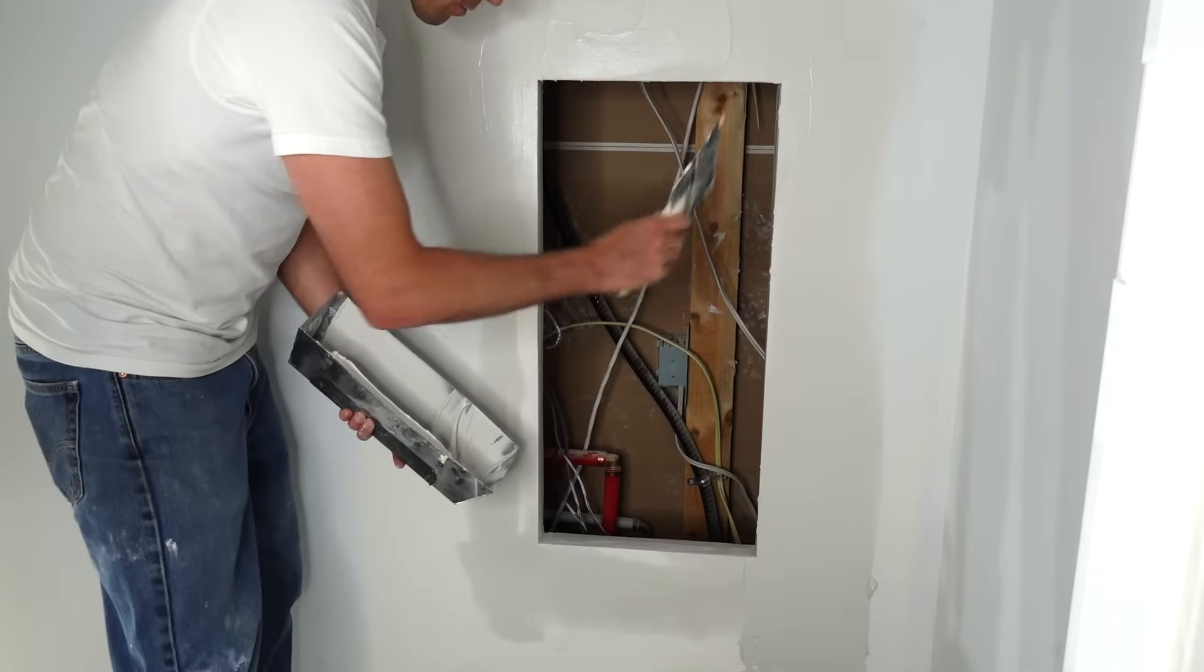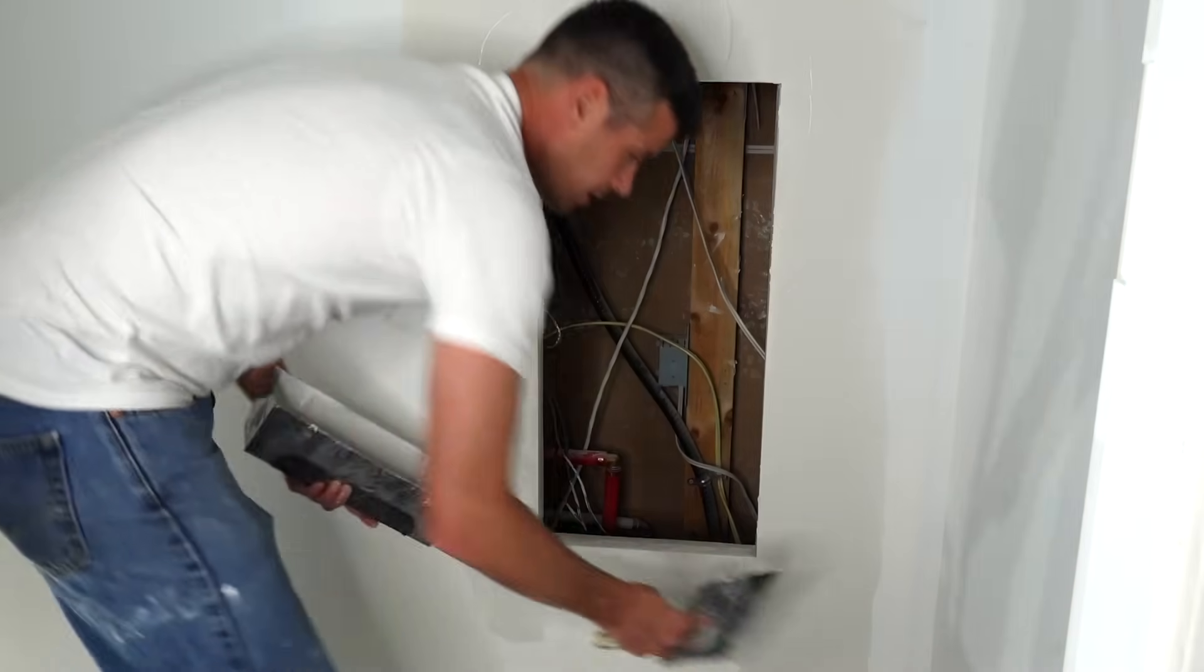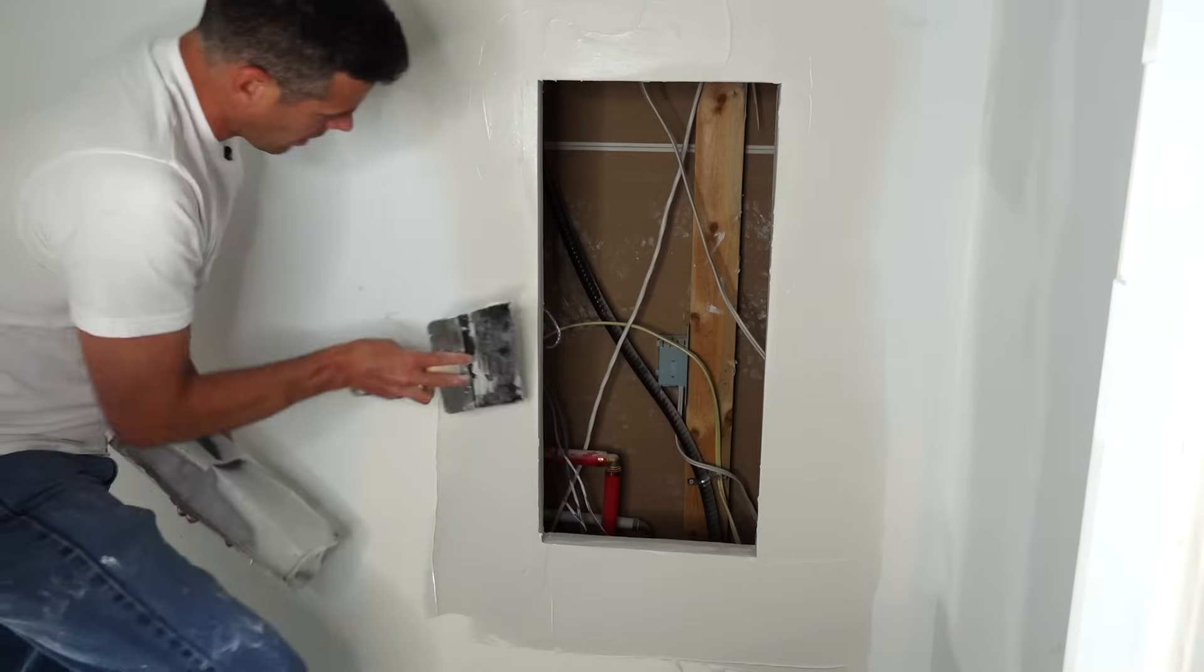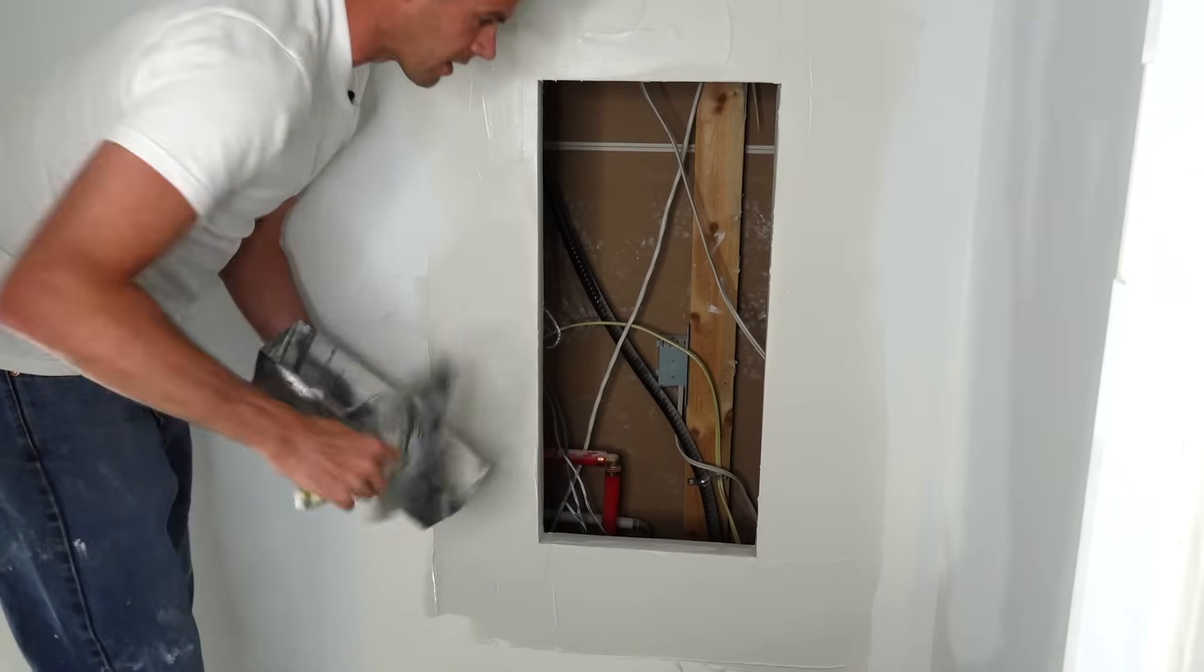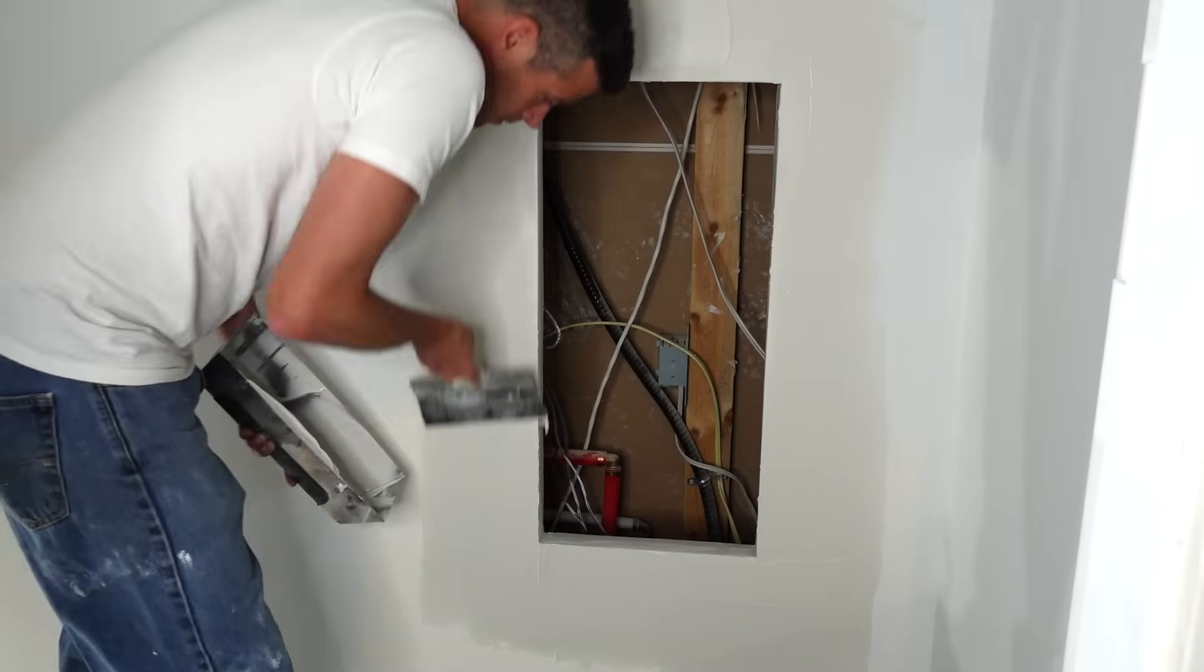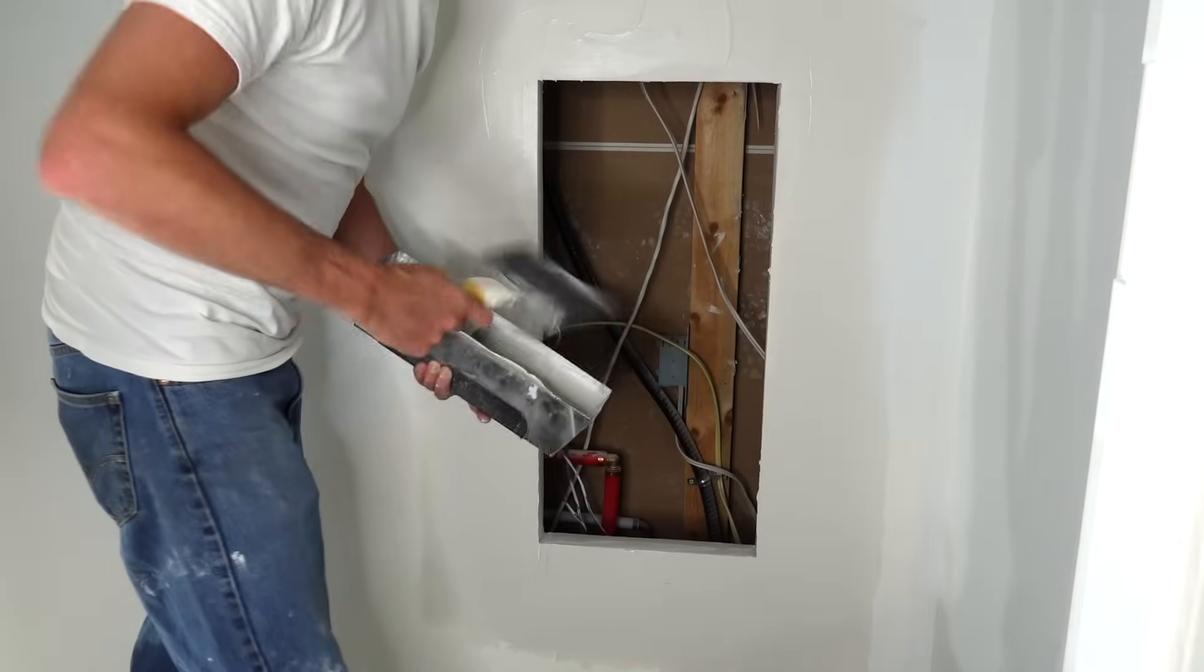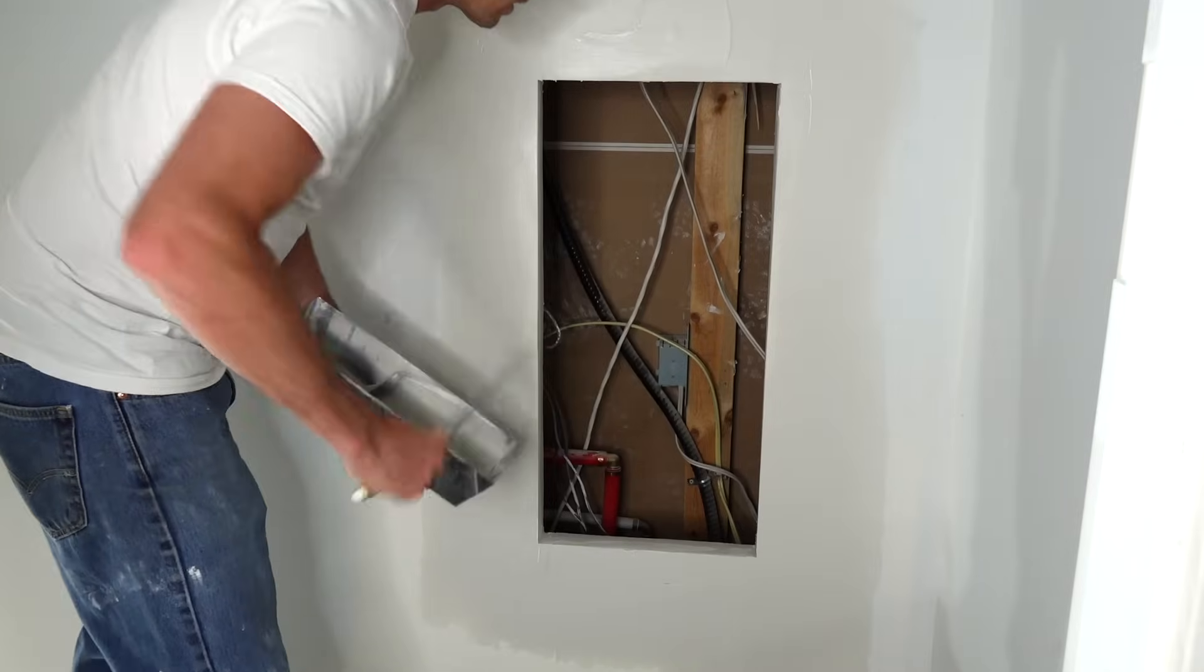So while this mud was setting up I did all my measurements. I got the measurements of the opening and I'm going to put a three-quarter inch MDF door in here. If you're going imperial I took off a quarter inch to give me a one-eighth reveal all around. For metric you're going to want to take about six mils off which is what I did.